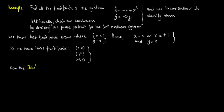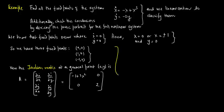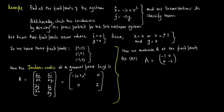The Jacobian matrix at a general point (x, y) is A = [[dx-dot/dx, dx-dot/dy], [dy-dot/dx, dy-dot/dy]] = [[−1 + 3x², 0], [0, −2]]. Evaluating at (0, 0): A = [[−1, 0], [0, −2]], so (0, 0) is a stable node.